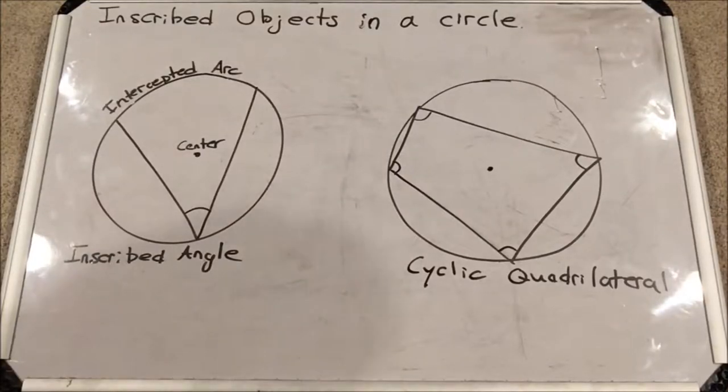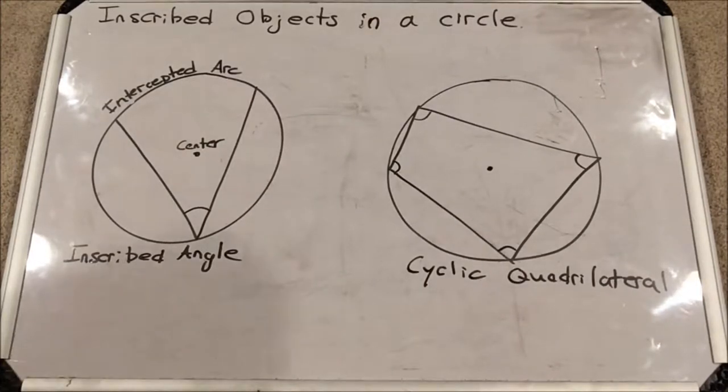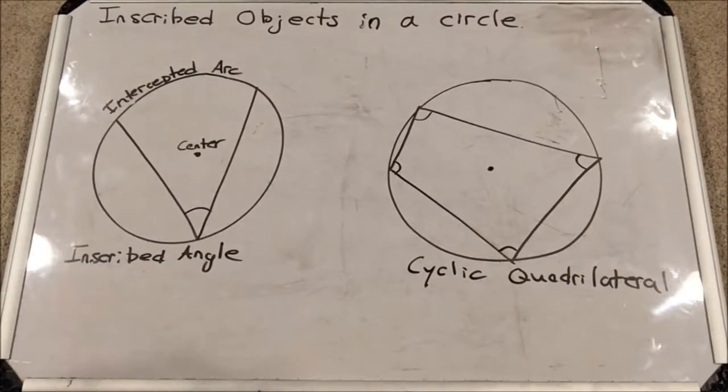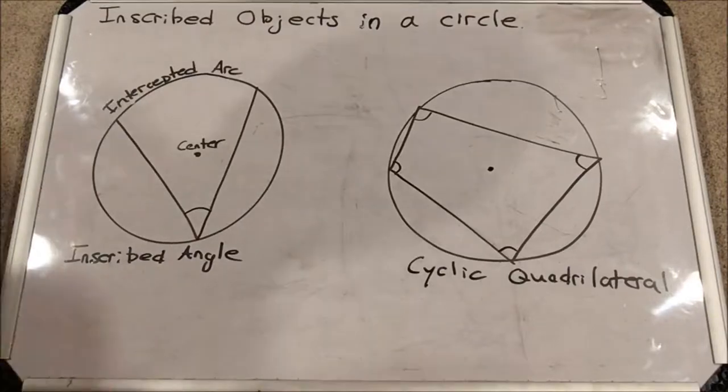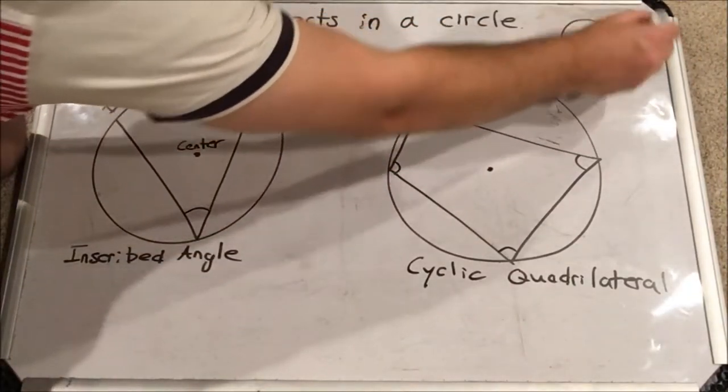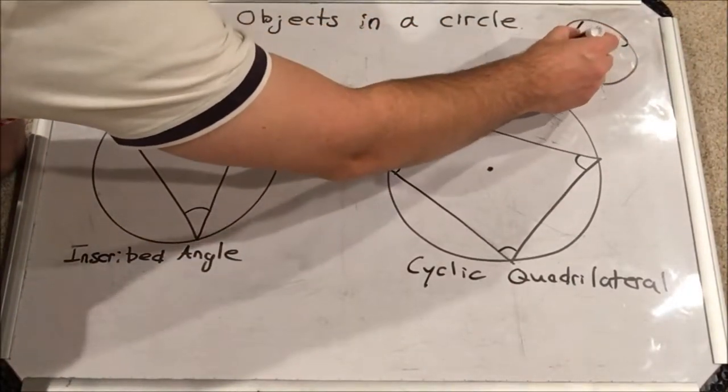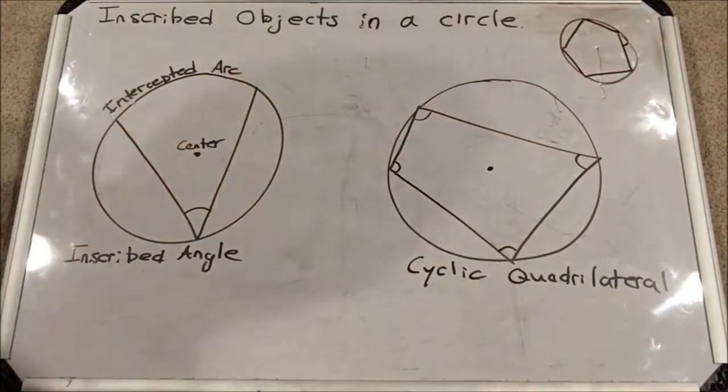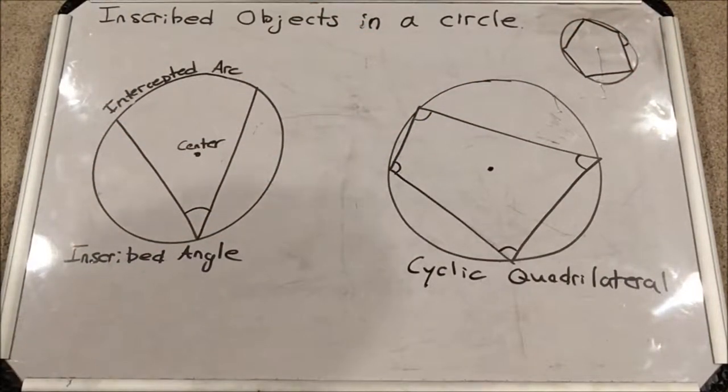Hey everyone, welcome to Tutor Terrific. Today I want to go over a neat geometry investigation with you, and that is inscribed objects in a circle. When I inscribe an object in a circle, that means the entire object fits inside the circle. If it's a polygon, that would mean all its vertices touch the circle.